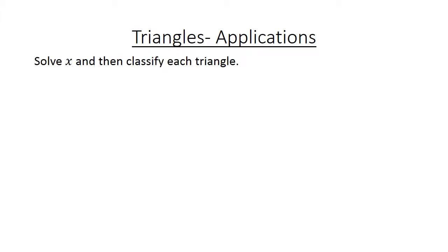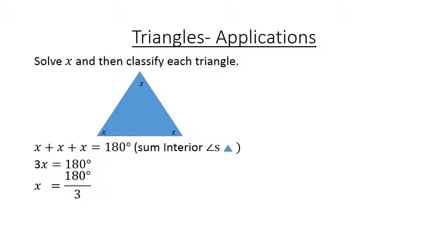Solve X and then classify each triangle. X is on top, the bottom, and both sides. X plus X plus X equals 180 degrees. The reason, the sum of the interior angles equals 180 degrees. 3X equals 180. We divide both sides by 3. X equals 60 degrees.